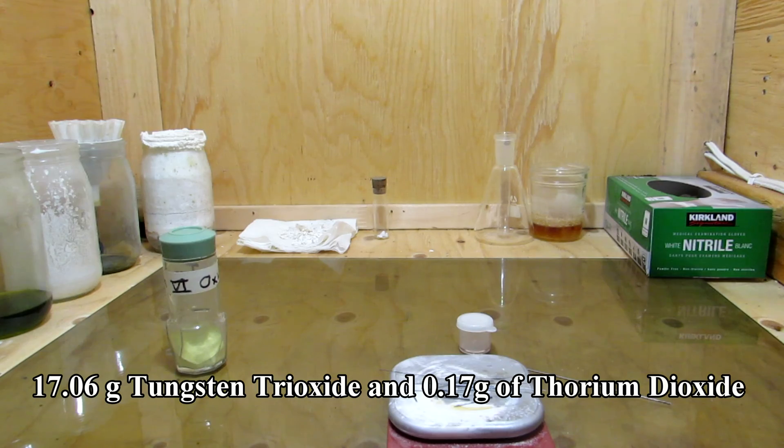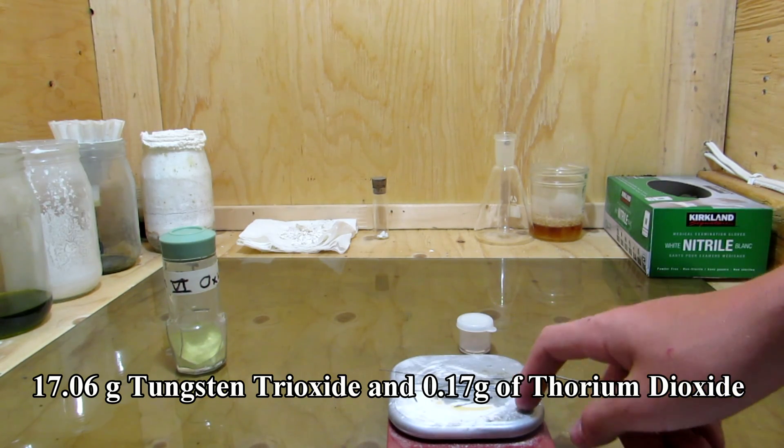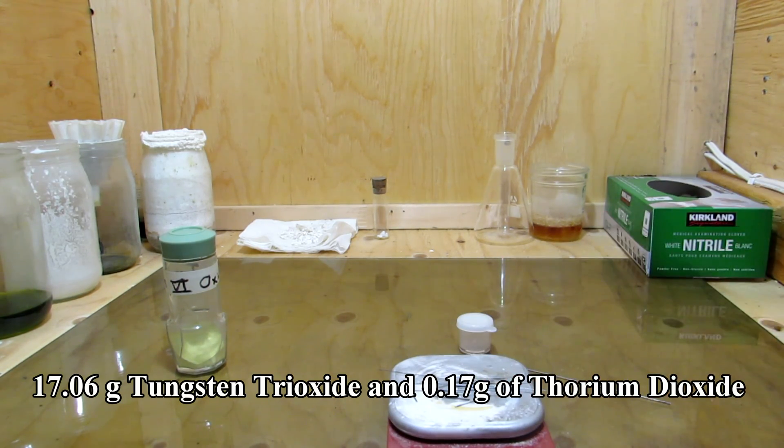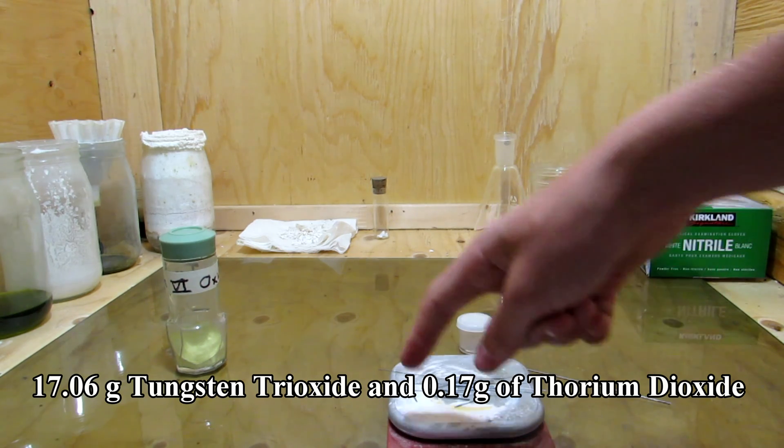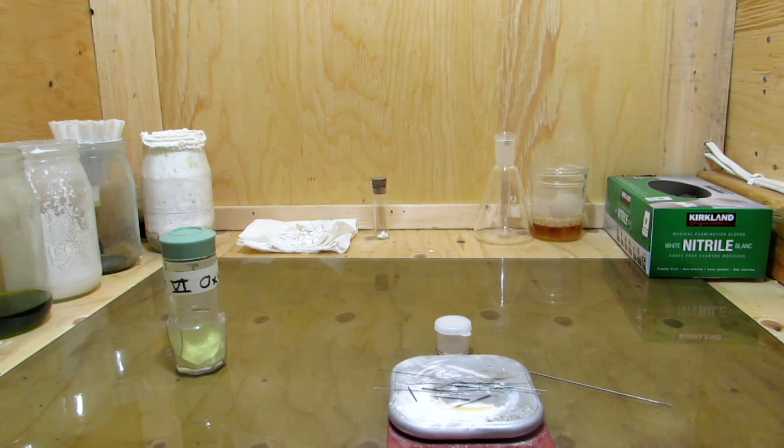However, approximately 2 grams of tungsten didn't dissolve, and some of the thorium dioxide was lost during filtration, so the lower yield was expected. The tungsten trioxide can be saved for a future project where we will attempt to reduce it with carbon in an arc furnace back to tungsten metal.